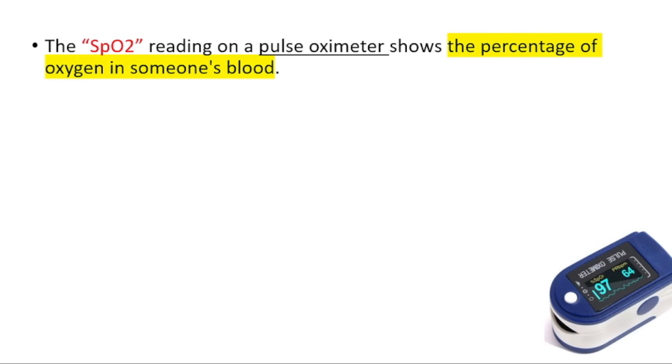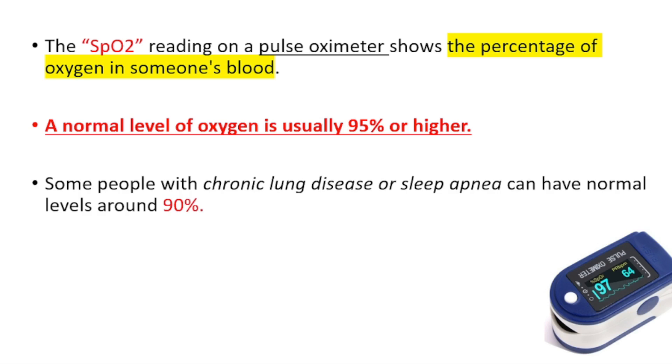The SpO2 reading you will see on a pulse oximeter shows the percentage of oxygen in someone's blood. The normal levels will be 95 percent or higher, but in some people with chronic lung disease or sleep apnea, they can have normal levels around 90 percent.